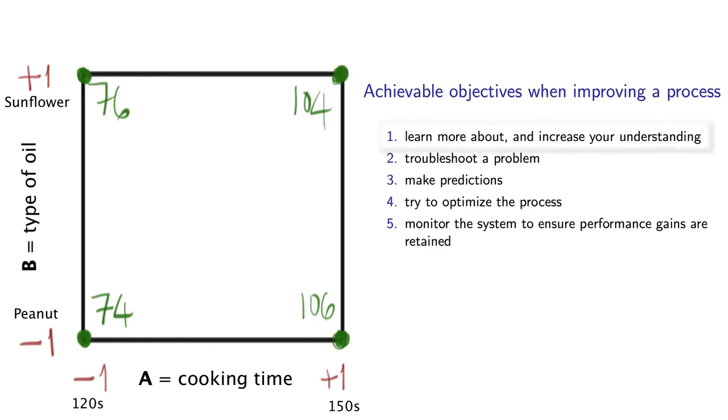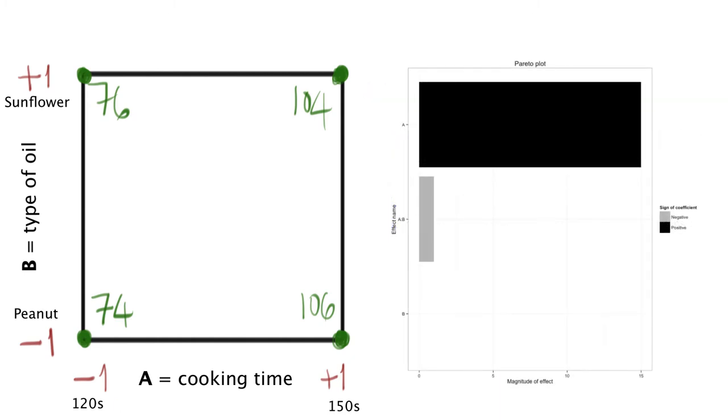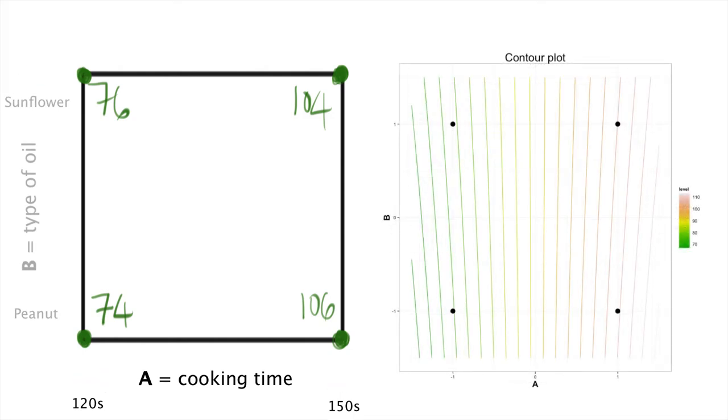Notice that the first objective of the five was used here. We learned that in our system, the type of oil, over this range of cooking times, seems to have little impact on the outcome. It doesn't mean that oil type is totally irrelevant. It simply says that over the range of cooking times used in this experiment, oil type seems to have little effect. Also notice that we could learn that the A-B interaction is not significant. We can see that in the Pareto plot as well as in the contour plots.